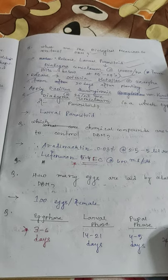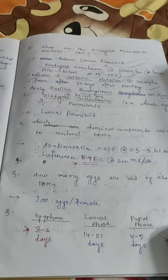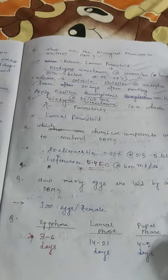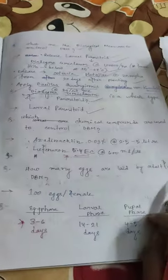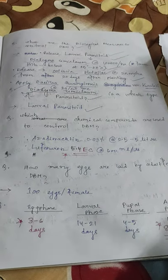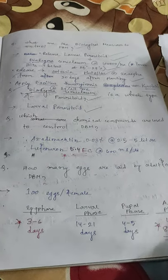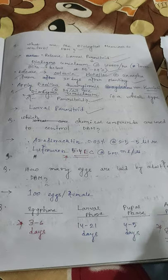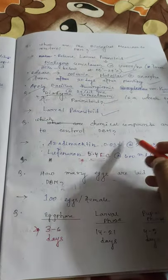Bacillus thuringiensis var. kurstaki is used to control Diamond Black Moth. Diadegma semiclausum is a larval parasitoid. Other biological agents include Cotesia plutellae and Bacillus thuringiensis var. kurstaki.